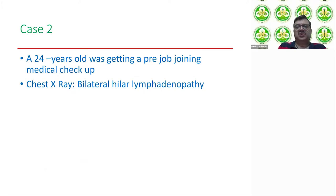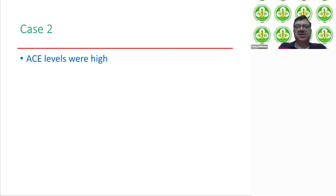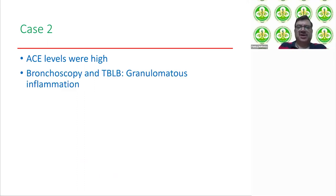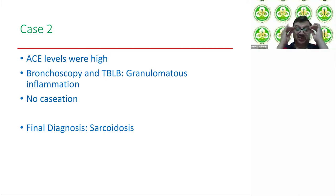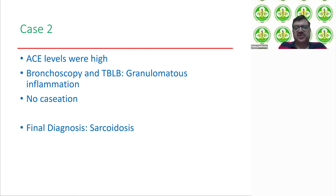For case two — who was getting a routine checkup and was found to have bilateral hilar lymphadenopathy while totally asymptomatic — ACE levels were sent and were higher than the normal range. He agreed for bronchoscopy and TBLB, which showed granulomatous inflammation without caseation. The diagnosis of sarcoidosis was made. The other differential, especially in a hematology clinic, could be lymphoma, which is why aspiration or biopsy is important.